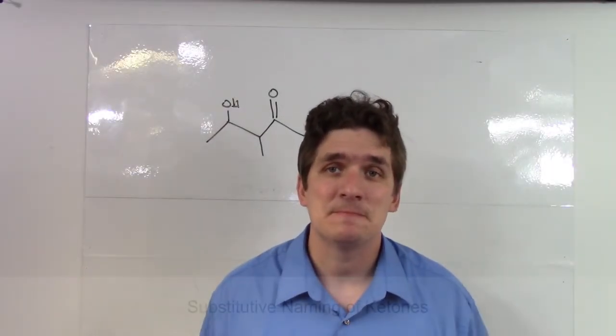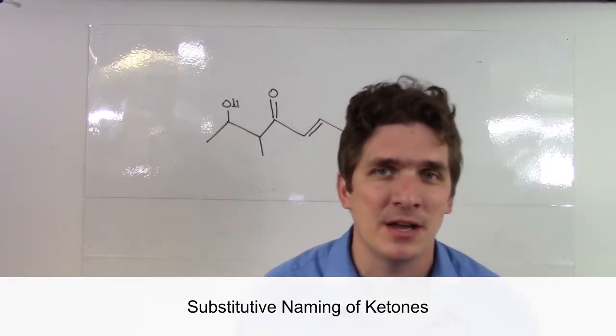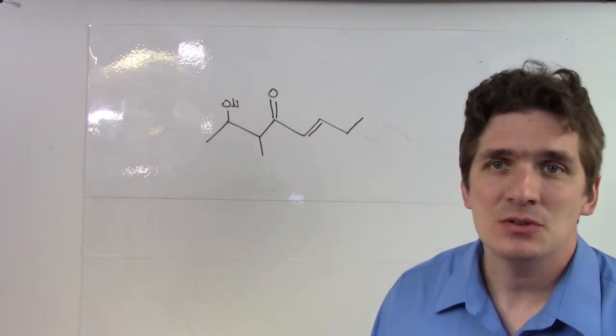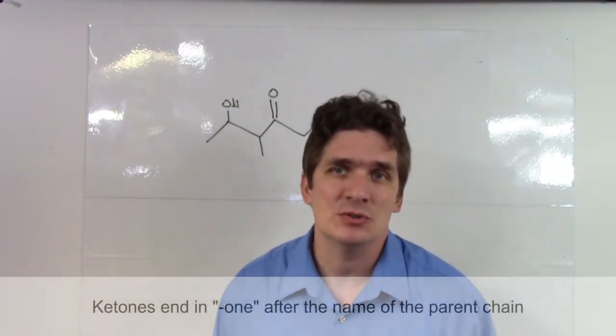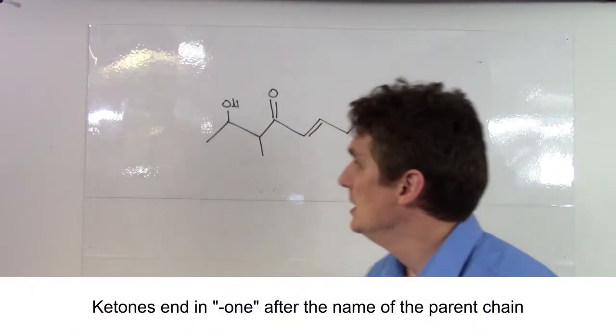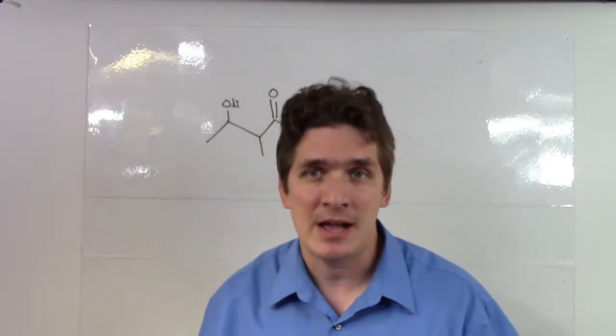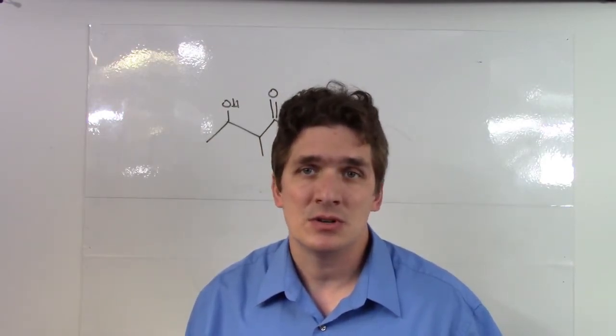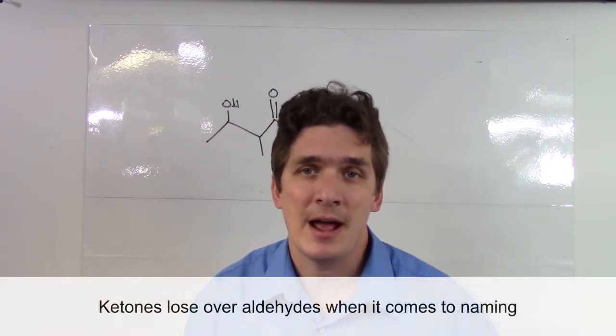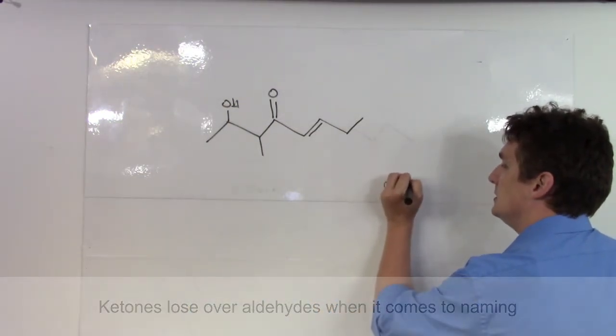Substituted naming of ketones. We're going to start good and hard because honestly you're probably getting a feel for how the IUPAC nomenclature works. So when we do this type of naming, the O-N-E naming system is what's used to designate that you have a ketone. So if you have a ketone in the compound and it's going to take the priority, and this is going to be true unless we have an aldehyde in there, so it's going to trump alcohols, it's going to trump alkenes, it's going to trump alcohol groups, and it's going to trump halogens. We're going to end in O-N-E.